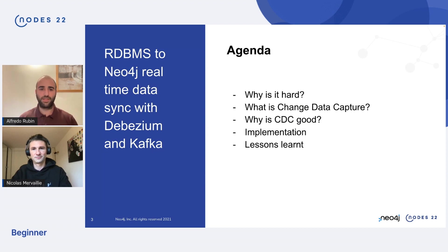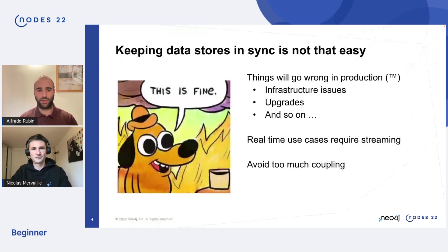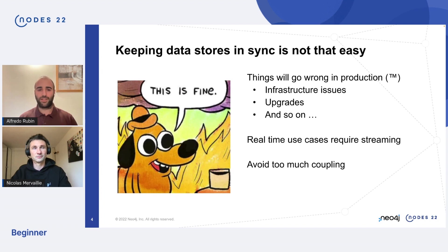First of all, why is it so hard? This may sound trivial, but keeping data stores in sync is not easy to productionize, because things will go wrong at some point in production. You may have infrastructure issues or have to do some upgrades. Also, batch data replication is just not good enough if you want real-time streaming and want to avoid too much coupling between the services in your architecture.